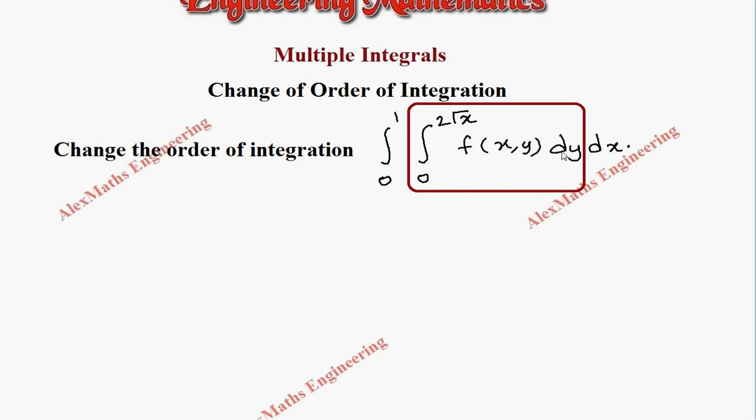The limit given here is with respect to y. Let's rewrite this. The given question is integral from 0 to 1, then integral from 0 to 2 root x, f of x comma y, dy dx. Since this is with respect to y, the limit is y equal to 0 and y equal to 2 root x. And this is the limit with respect to x, so x is equal to 0, x is equal to 1.